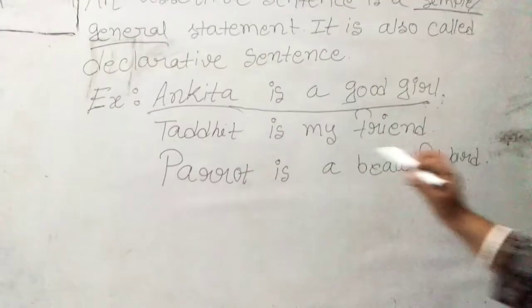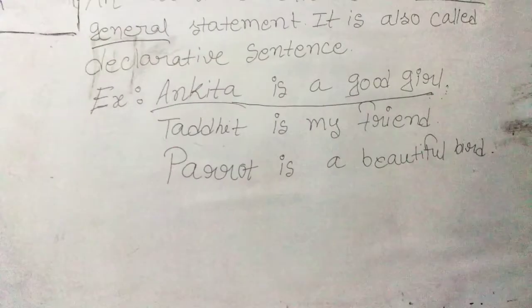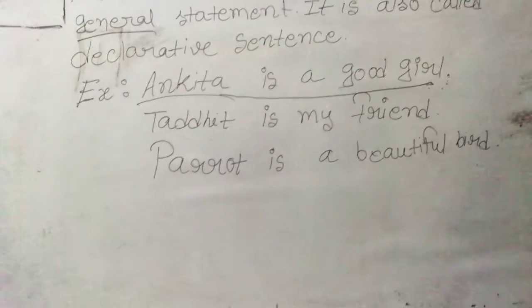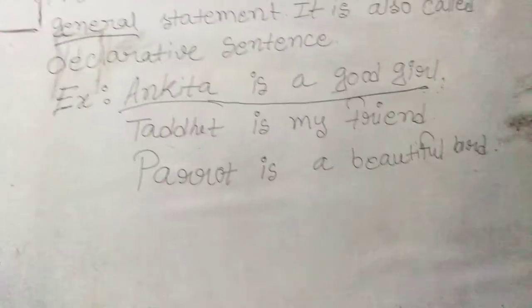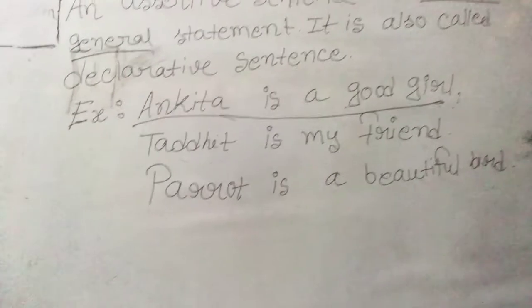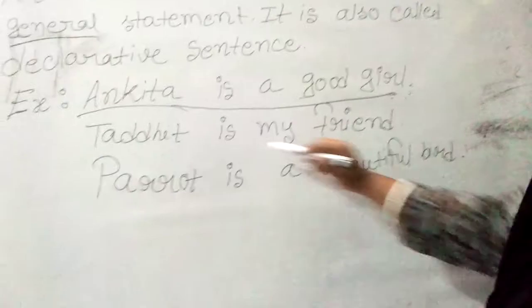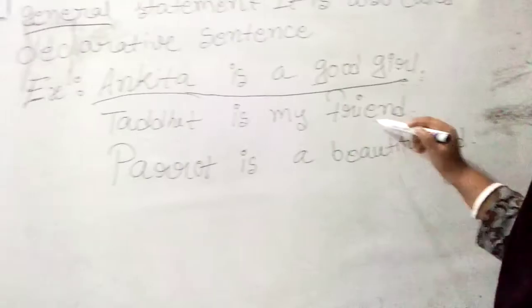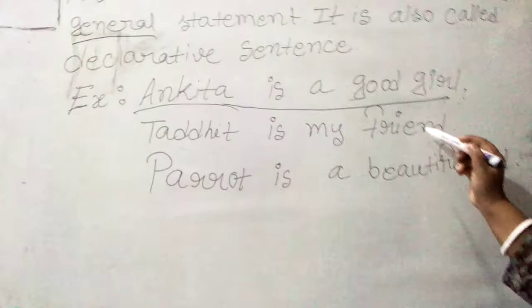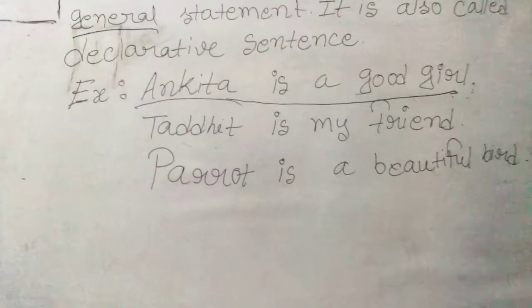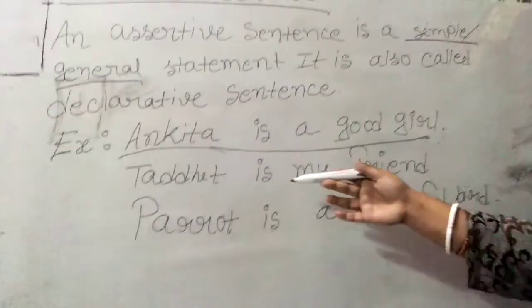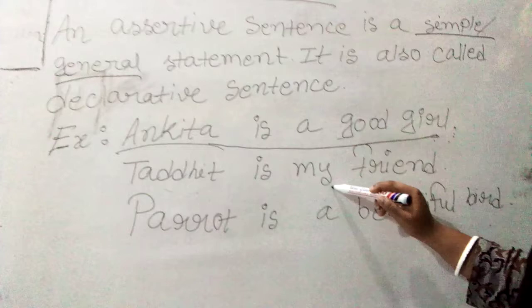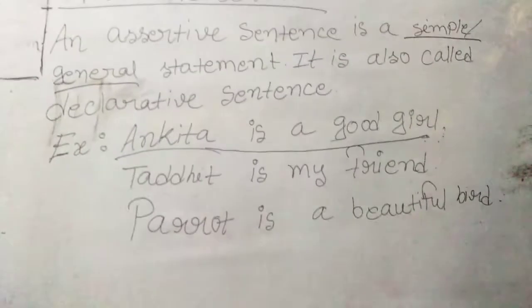The second example: 'Toddit is my friend.' Is there a friend named Toddit in your class? You have a friend named Toddit Chakma who attends school and follows our online classes regularly. Is it true? Yes, it is true. Is it a very normal, general sentence? Yes — there is nothing complicated in it. So can we say it is an assertive sentence? Yes, it is an assertive sentence.